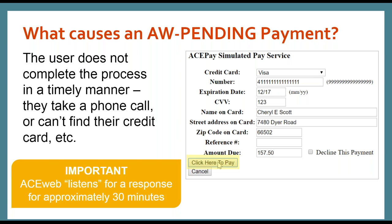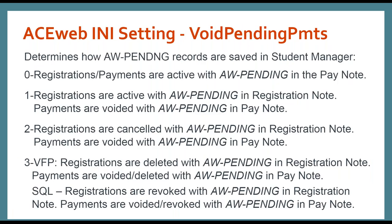Now we're going to jump to the ACEweb INI setting that controls how much cleanup is done for those pending records — specifically, what happens to the registration and the payment when ACEweb never receives a response from your gateway. There are four options. Zero is basically disabled — it's not going to do any cleanup at all. For option one, your registration is going to be left as-is with AWPending in the RegNote, but the payment is going to be voided.